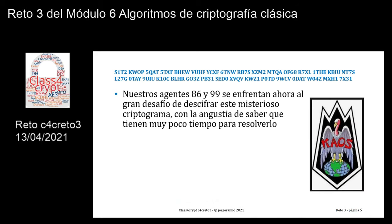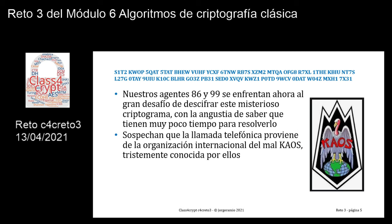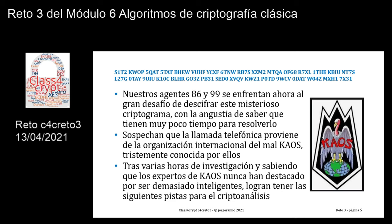Nuestros agentes 86 y 99 se enfrentan ahora al gran desafío de descifrar este misterioso criptograma, con la angustia de saber que tienen muy poco tiempo para resolverlo. Sospechan, eso sí, que la llamada telefónica proviene de la Organización Internacional del Mal, CAOS, tristemente conocida por ellos. Tras varias horas de investigación, y sabiendo que los expertos de CAOS nunca se han destacado por ser demasiado inteligentes, logran tener las siguientes pistas para el criptoanálisis.